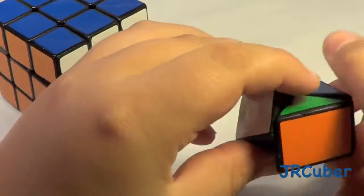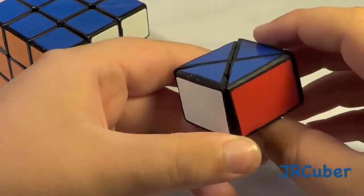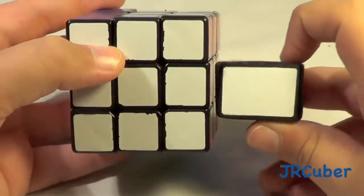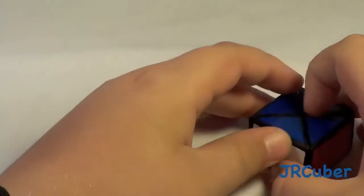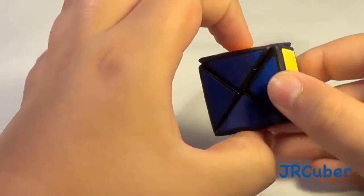So when you solve it, let's check: white, blue, red. So what it does is it switches these two pieces.